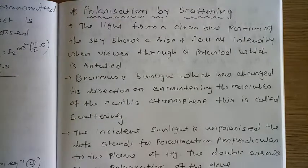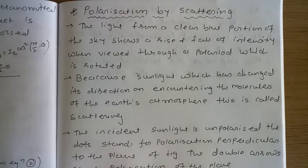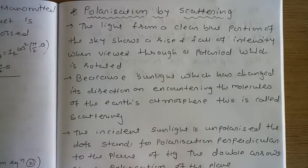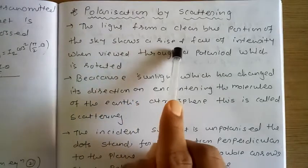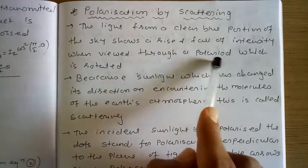Now, polarization by scattering. The question is: explain polarization by scattering. This question has already been asked in board exams. We know that if we rotate a polaroid there will be a change in intensity — it will increase or decrease. The light from a clear blue portion of the sky shows a rise and fall of intensity when viewed through a rotating polaroid.